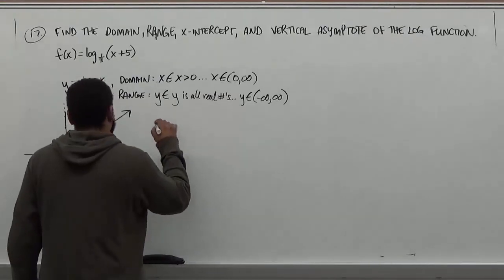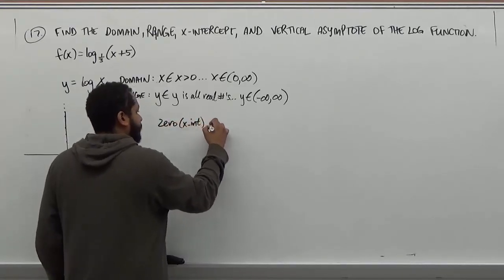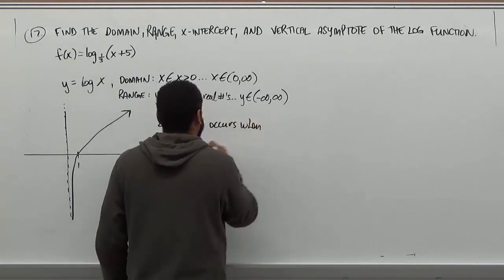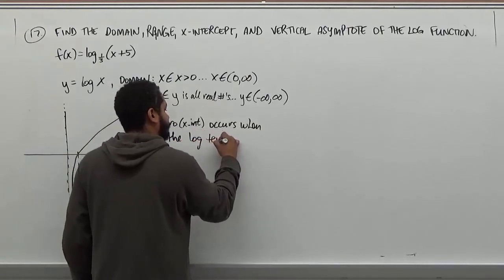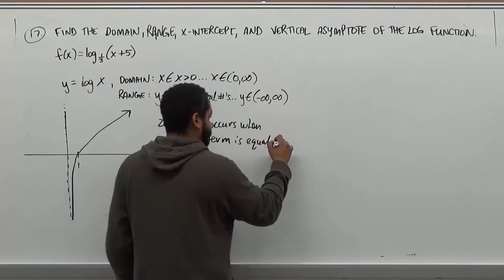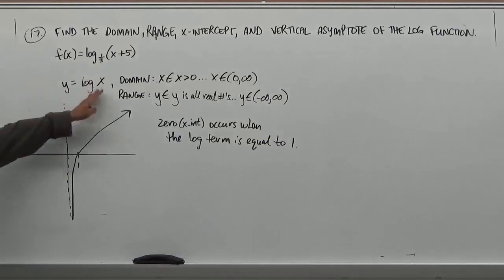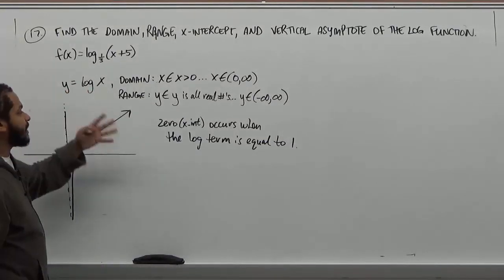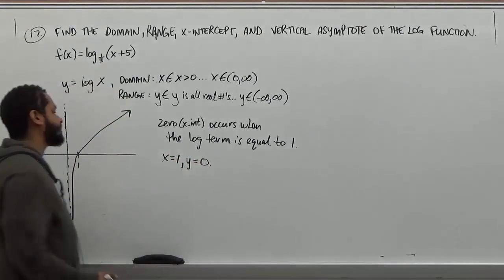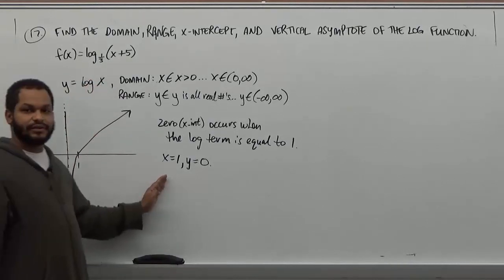So we know that the zero occurs, or the x-intercept, when the log term is equal to... actually equal to one, not zero. So in this case, when log of x, we're looking for the intercept of log of x, we know that x equals one, and the y will be zero. And this is the case for any kind of logarithm. Whenever the function of the log is equivalent to one, you get your x-intercept.